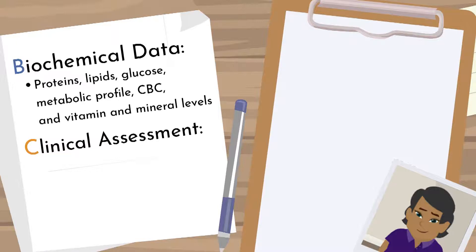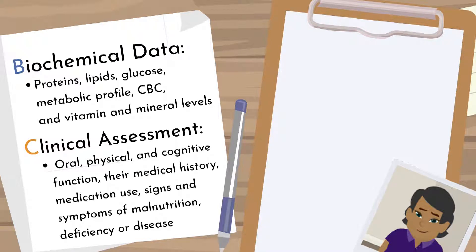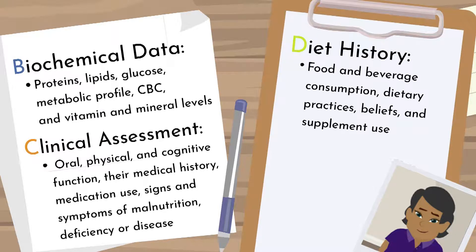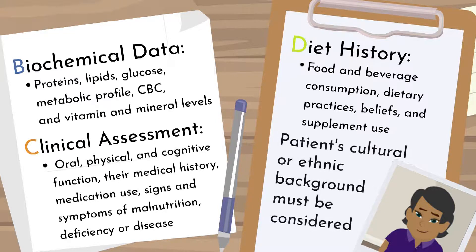Clinical assessment includes information on a patient's oral, physical, and cognitive function, their medical history, medication use, and signs and symptoms of malnutrition, deficiency, or disease. Diet history includes information on food and beverage consumption, dietary practices, beliefs, and supplement use. A patient's cultural or ethnic background must be considered when obtaining a diet history.